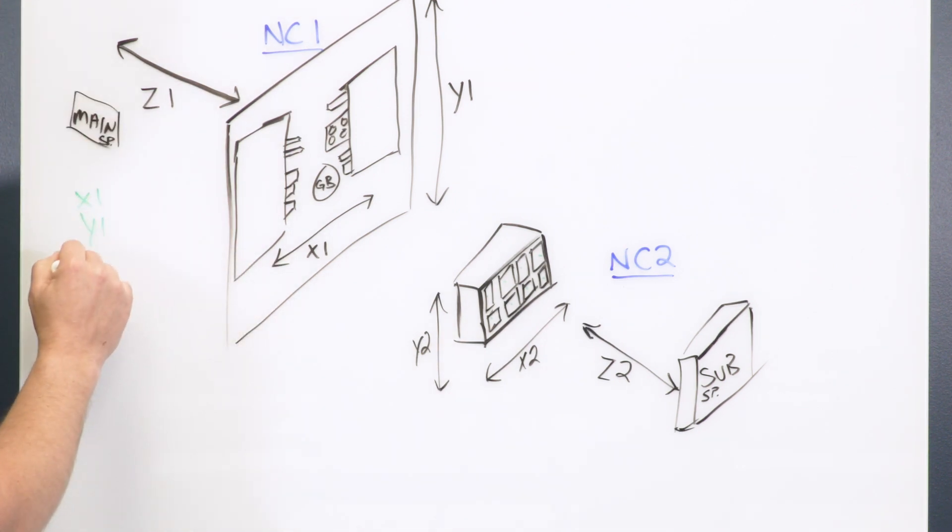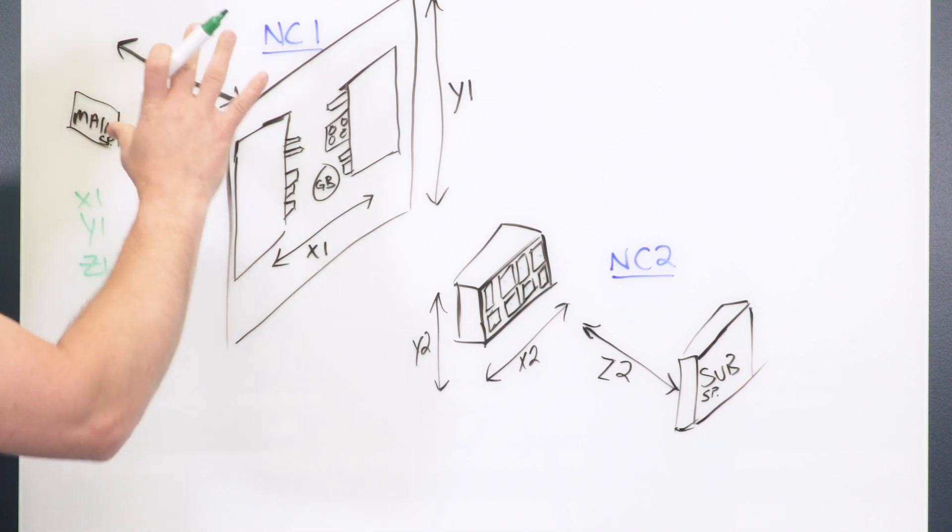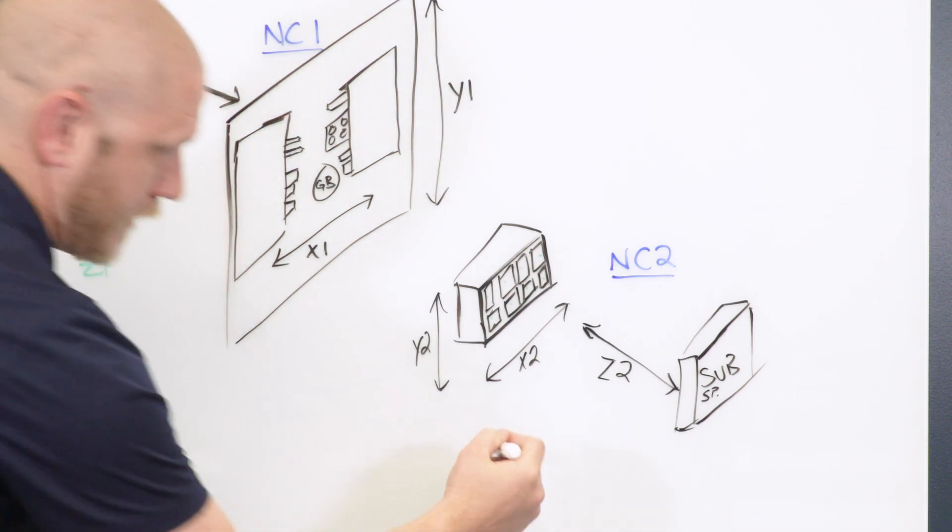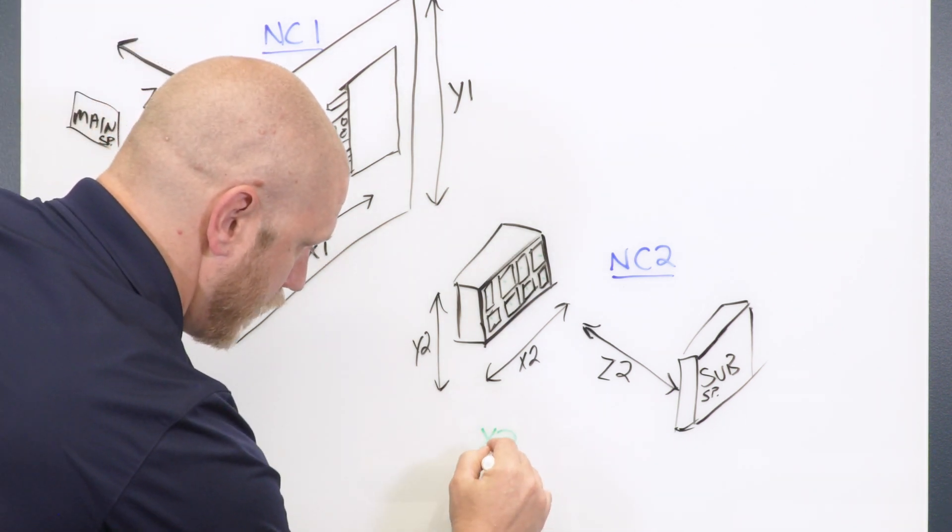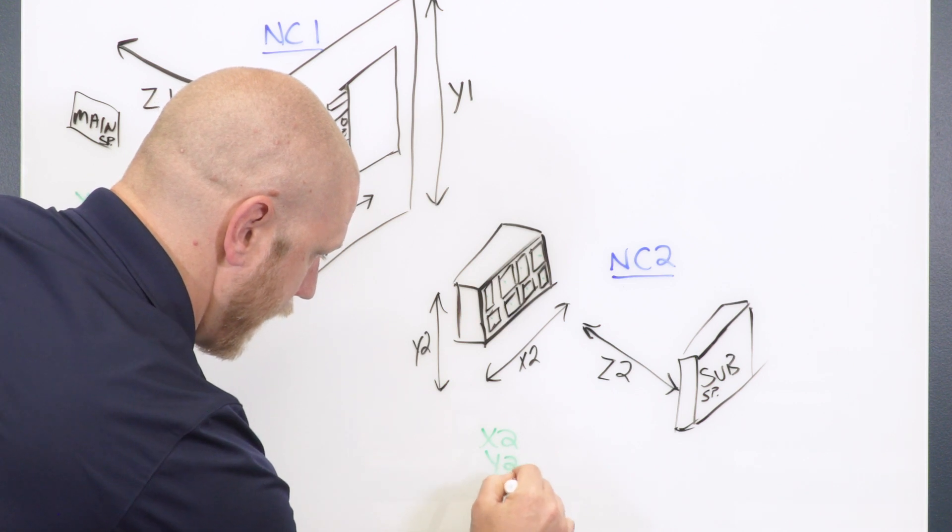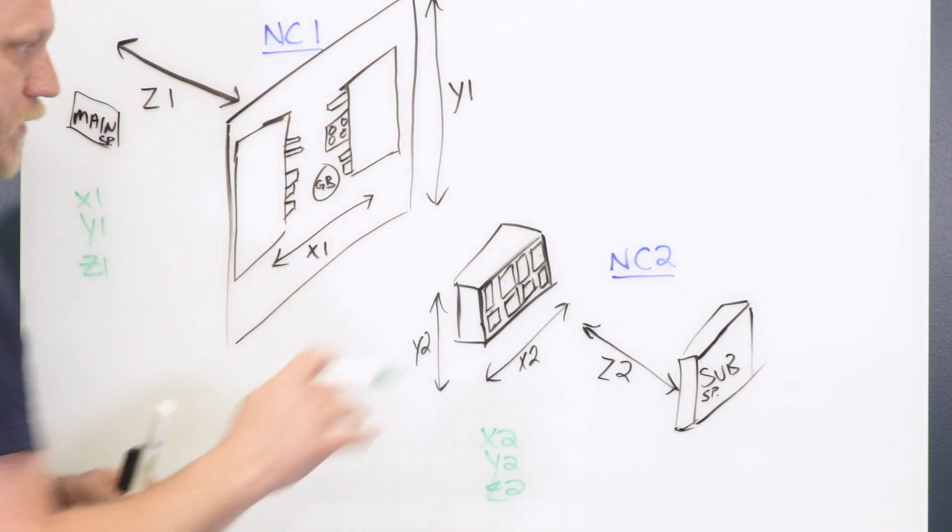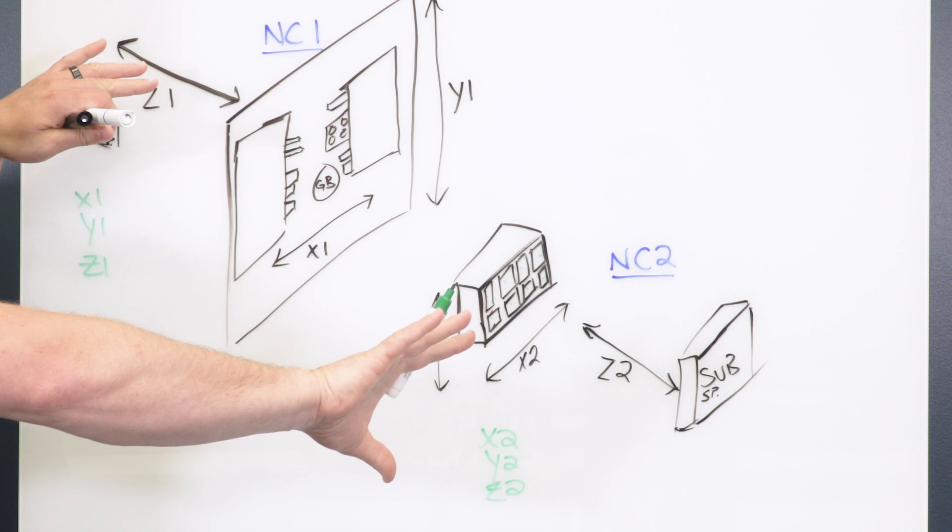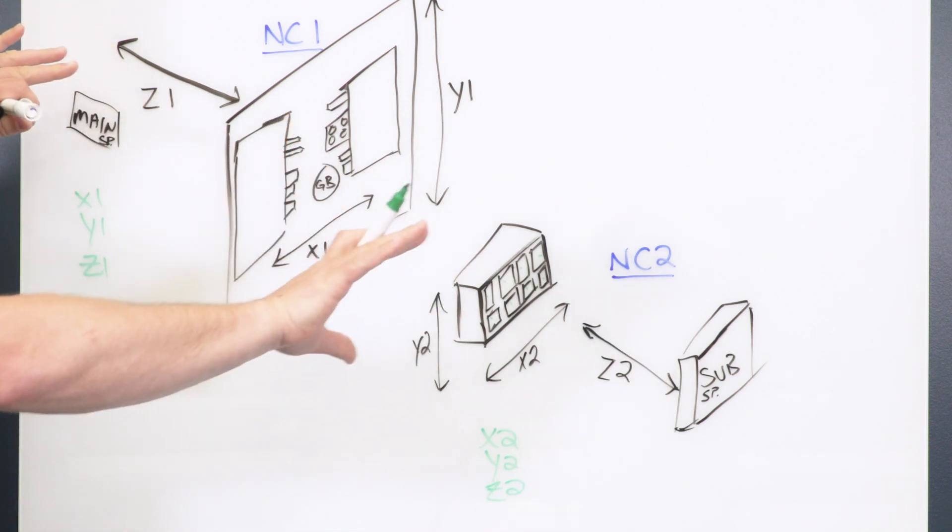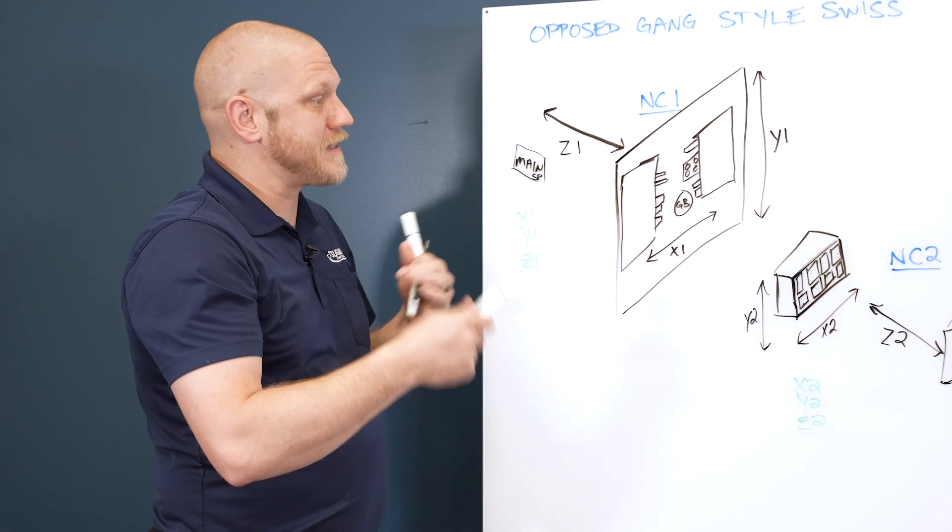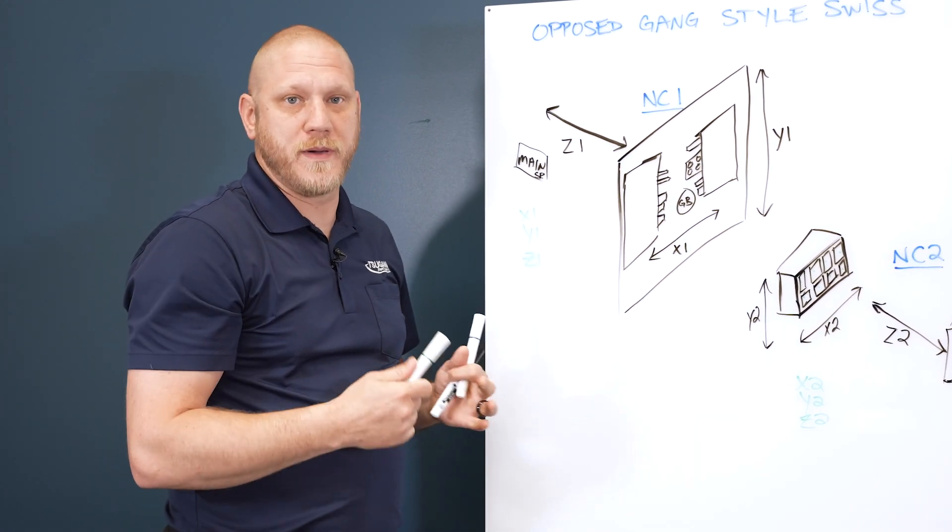So you have X1, Y1, Z1. That's going to be your main spindle side. And then your back side is going to be X2, Y2, and Z2. That's going to be your sub spindle side. So two sets of Cartesian coordinates, one set on each path. That's how the axis designation works on a typical two-path Swiss machine.